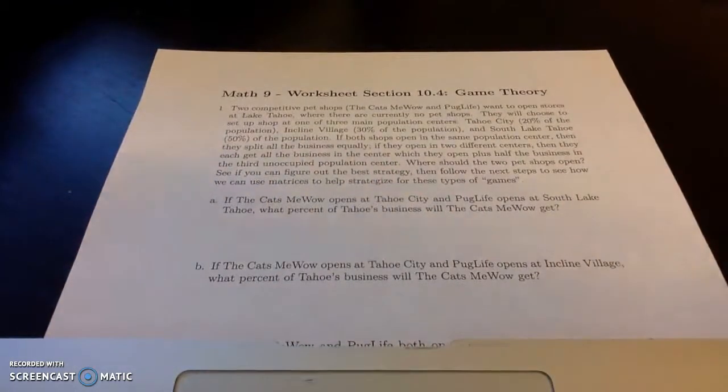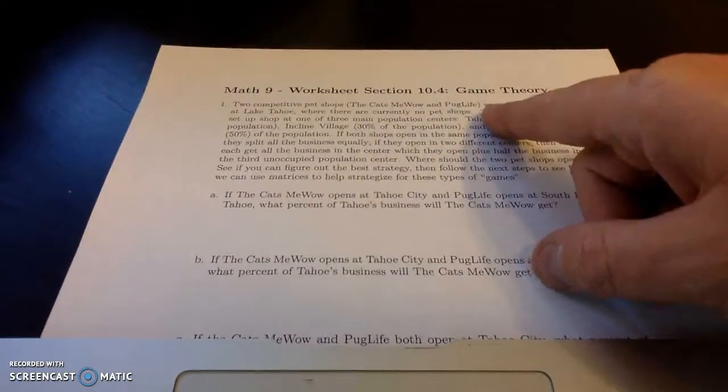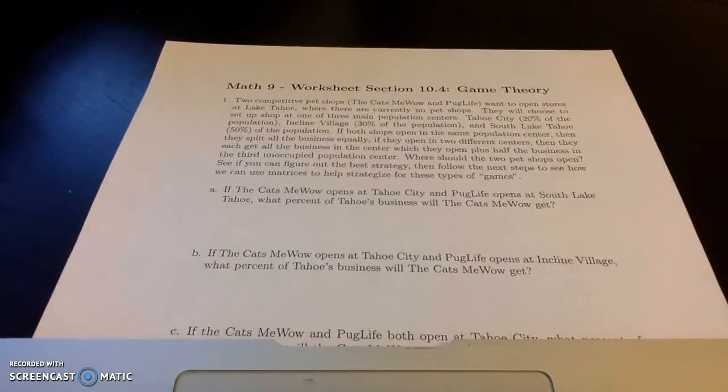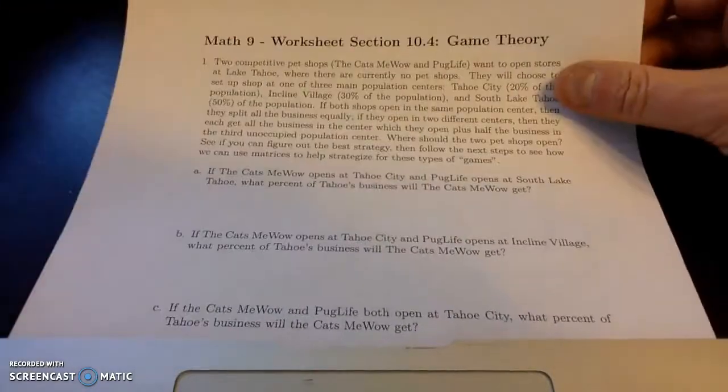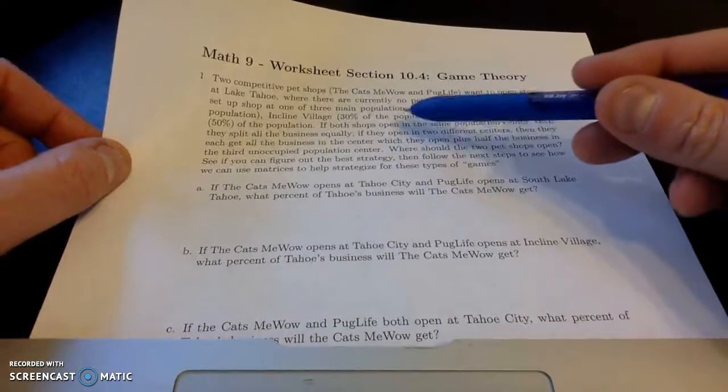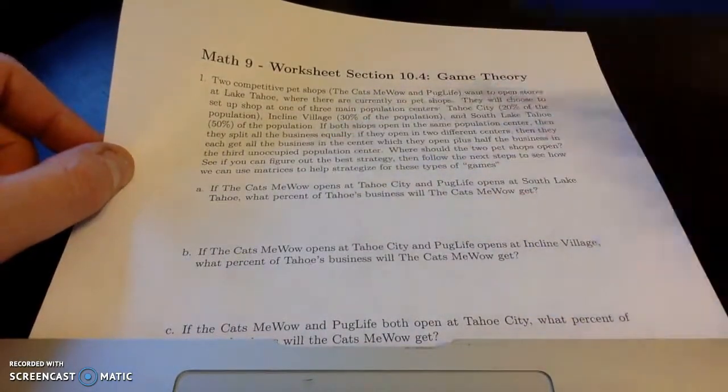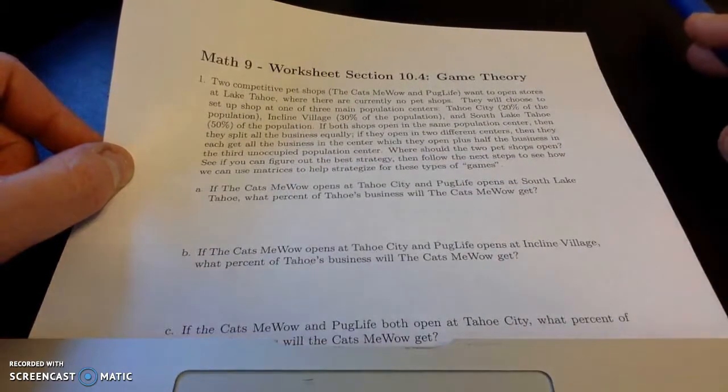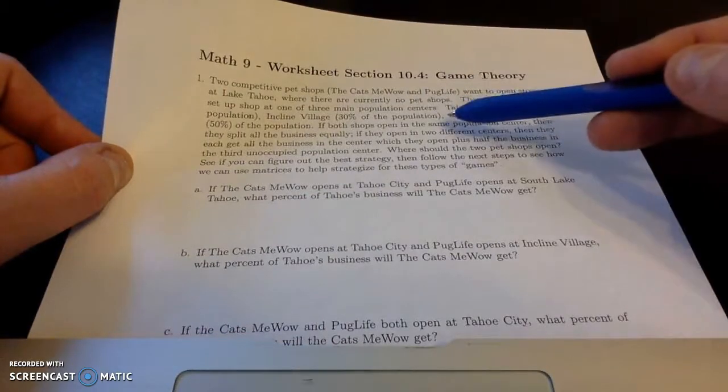Hello, in this video I want to go over a worksheet from section 10.4, introducing game theory. In this worksheet we're going to set up a payoff matrix and then learn how to look for saddle points of this payoff matrix. But first let's take a look at the scenario. Suppose we have two competitive pet shops, wonderfully named the Cats Meow and Pug Life, and they want to open stores somewhere on Lake Tahoe where there's currently no pet shops.